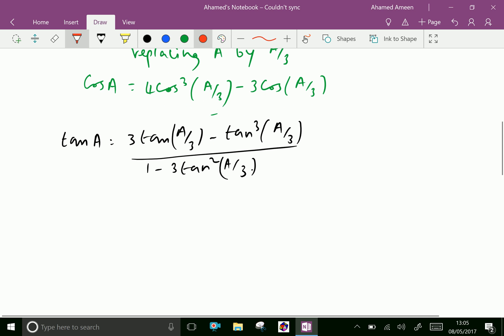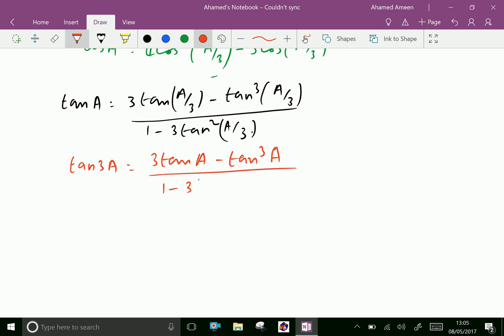We know the identity of tan 3A equals 3 tan A minus tan³ A over 1 minus 3 tan² A.